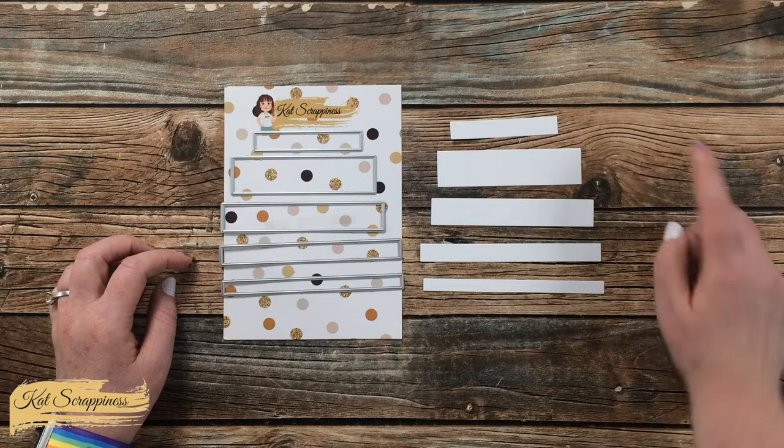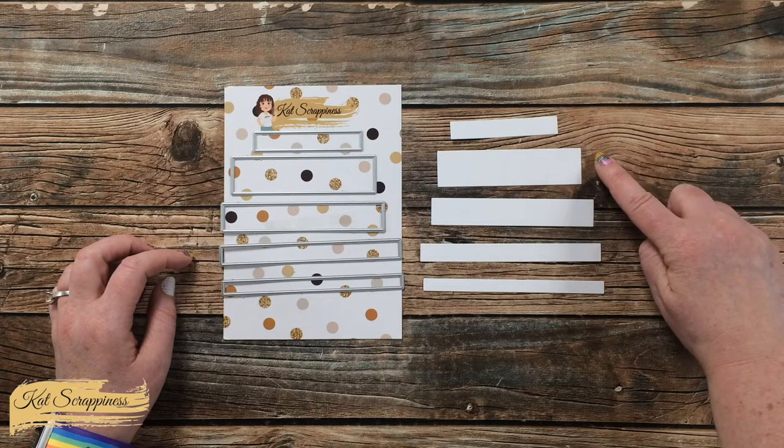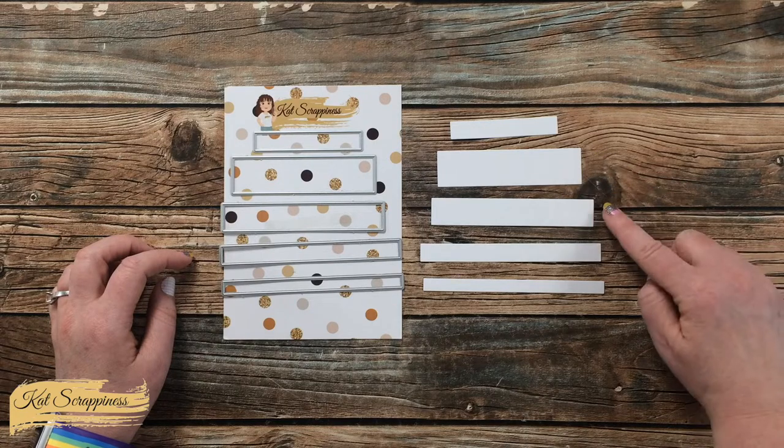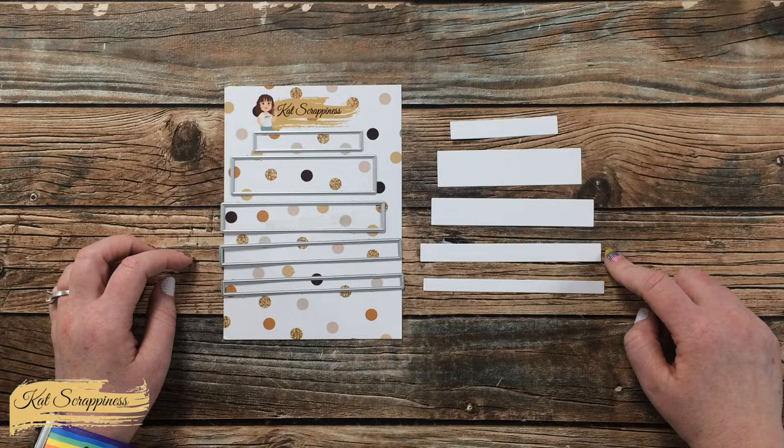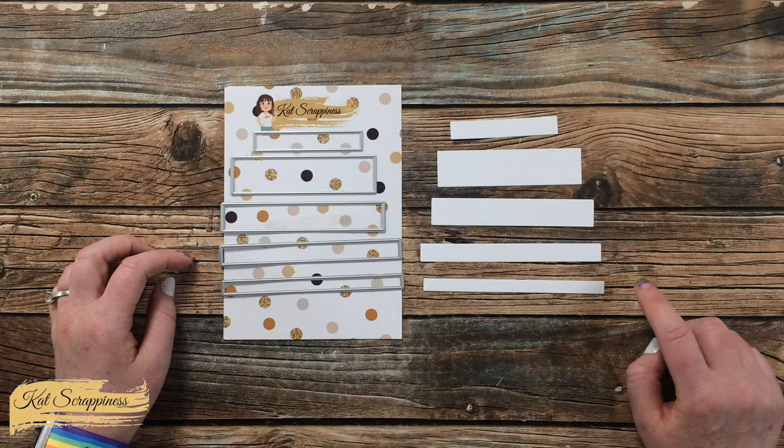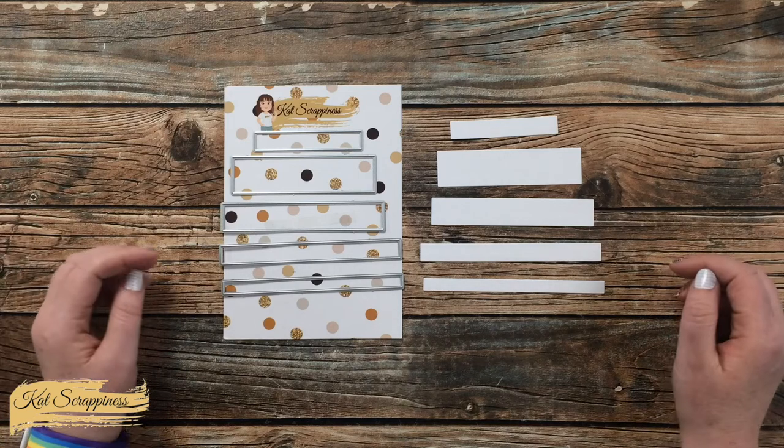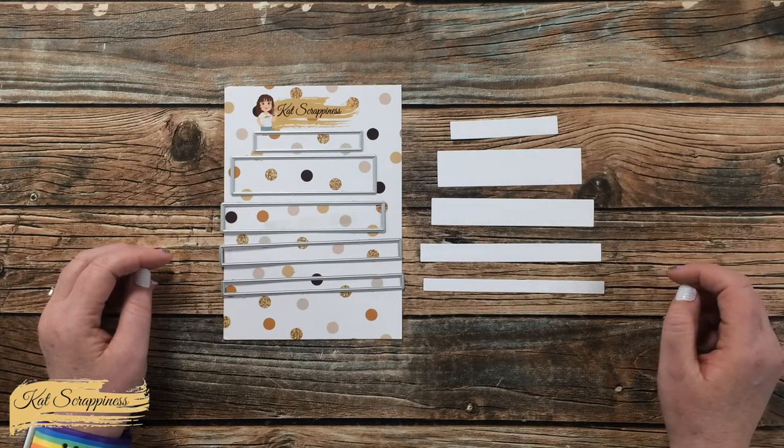From top to bottom, the dimensions are 3 inch by 1½ inch, 4 inches by 1 inch, 4½ inches by ¾ inch, 5 inches by 1½ inch, and 5 inches by ⅜ inch. Now you don't have to worry about remembering those—I will put those dimensions in the description box below.